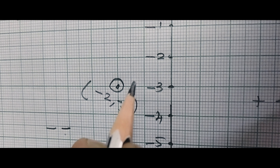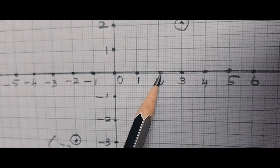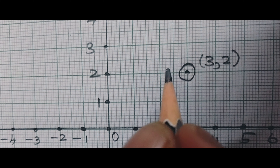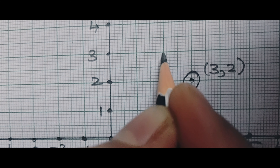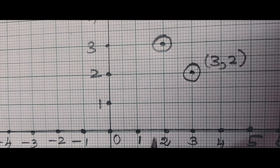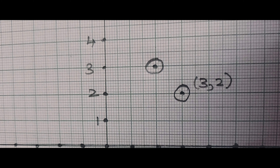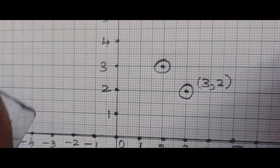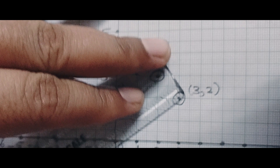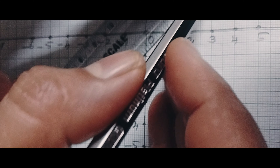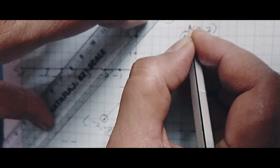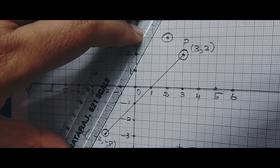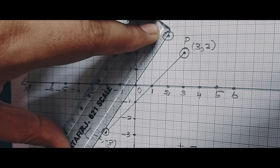Next you have to plot R(2,3). X is 2, Y is 3. Now we have completed plotting the graph. Next you have to join them. Join P(3,2) to Q(-2,-3), then join R(2,3). This one is P, this one is Q, and this one is R(2,3).